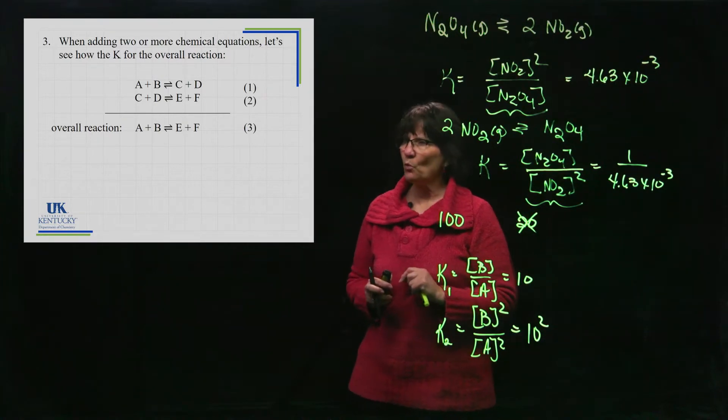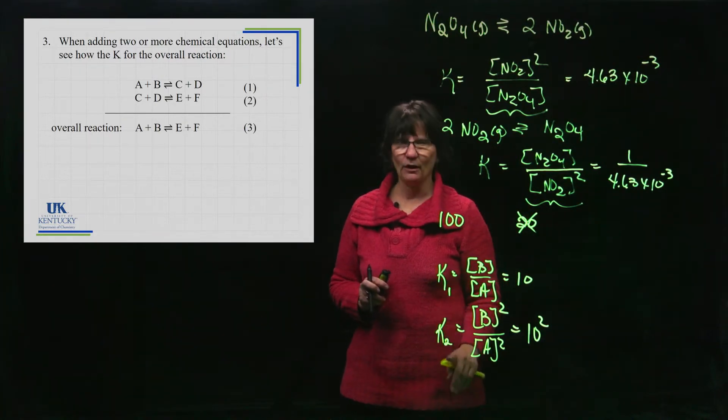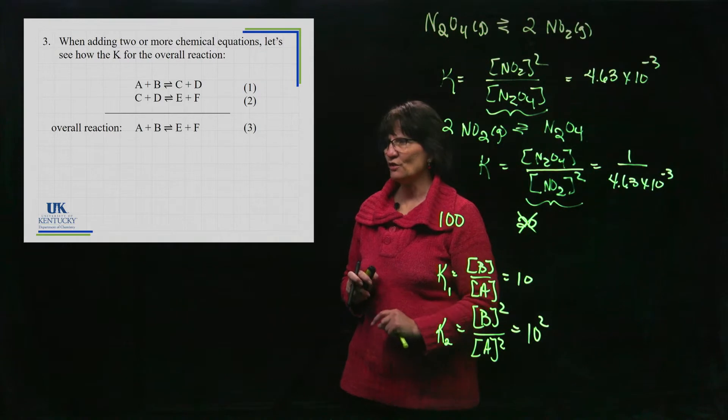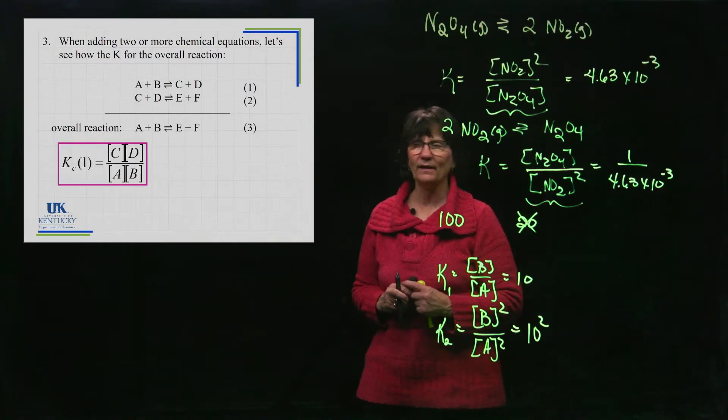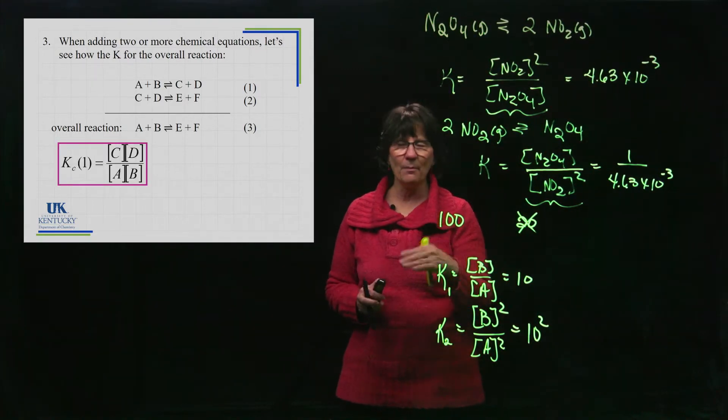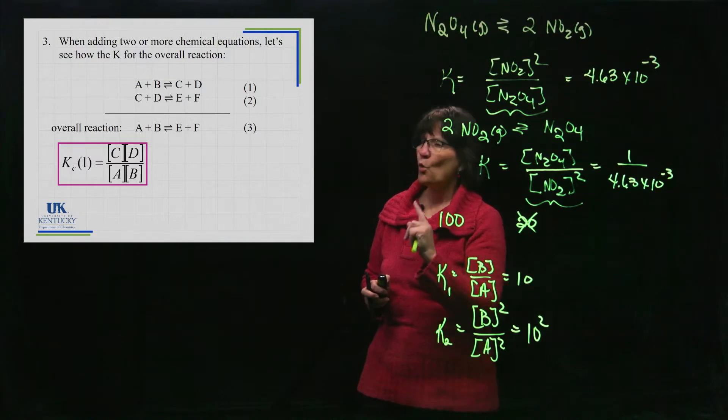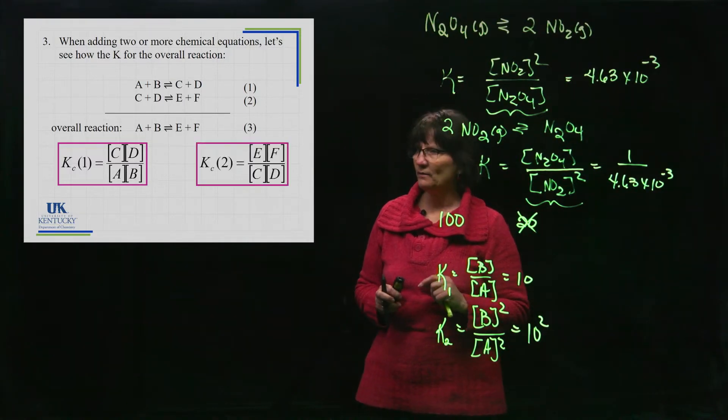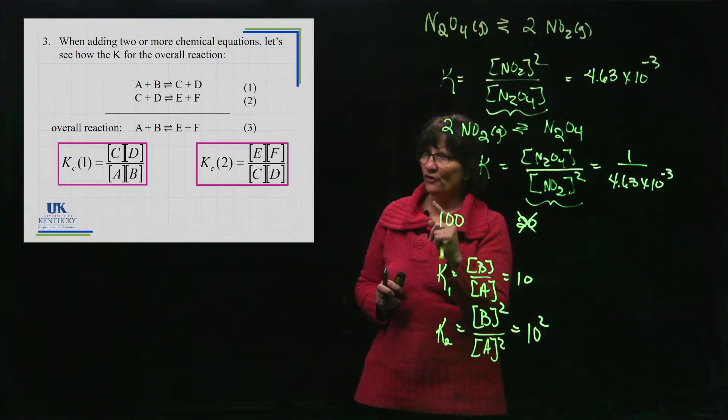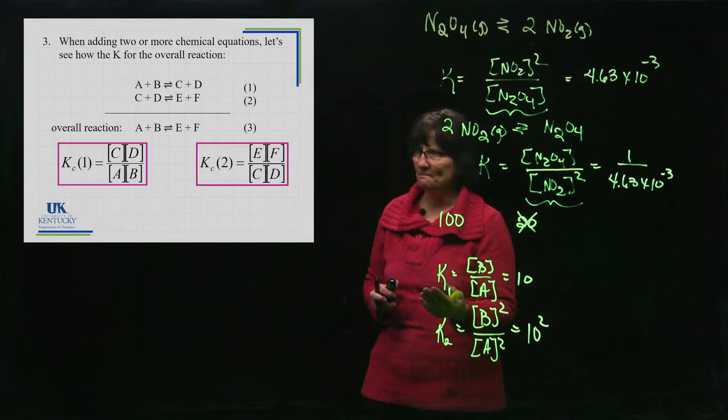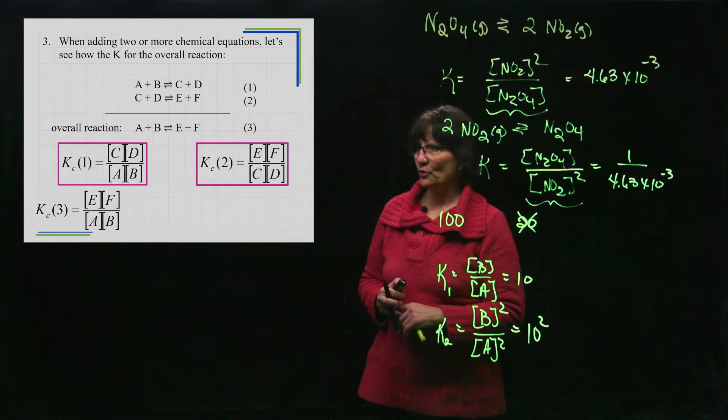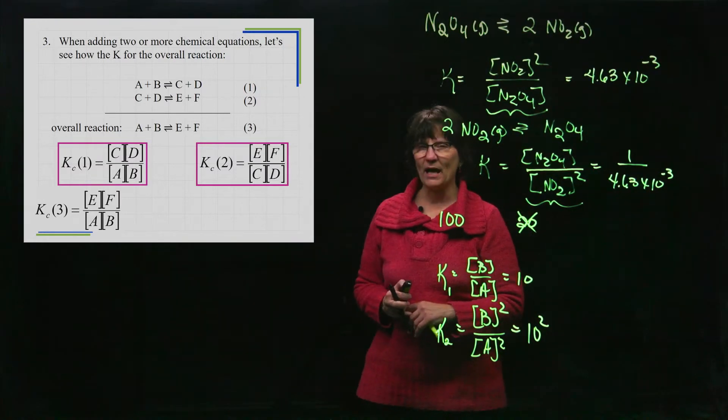So for reaction number one, what would its expression be? The law of mass action, the expression for number one. It would look like that. C and D are on the top, A and B are on the bottom. What would reaction two look like? E and F are on the top, C and D are on the bottom. And then of course, the overall reaction is this one right here, EF over AB.